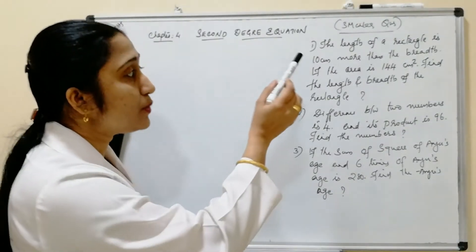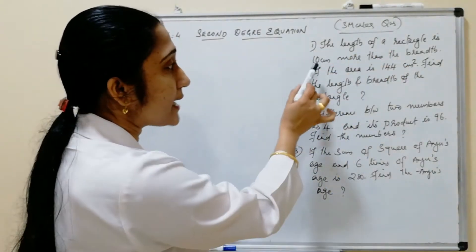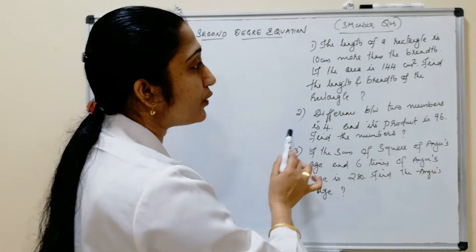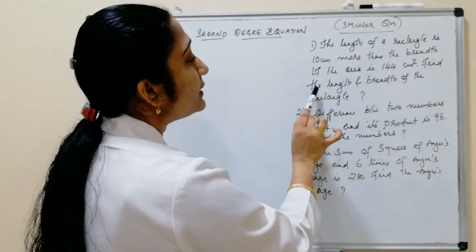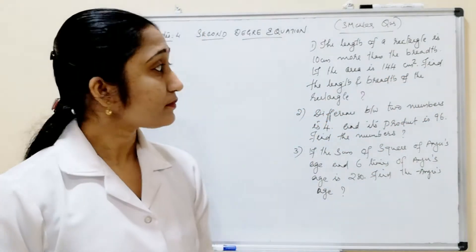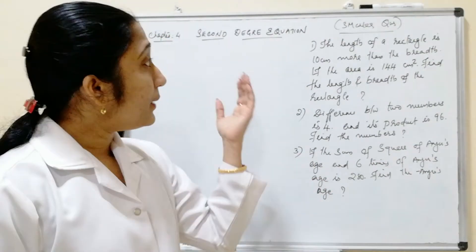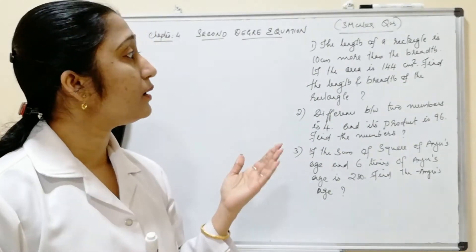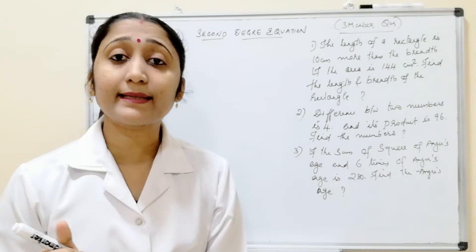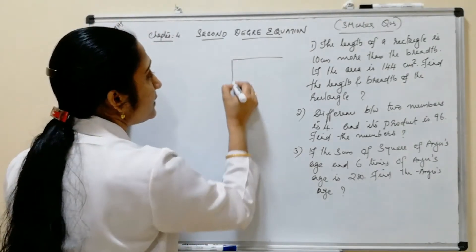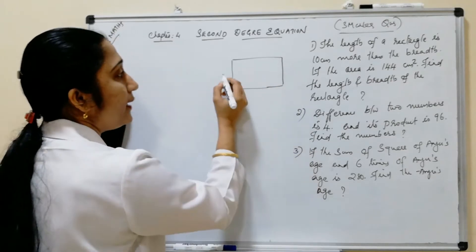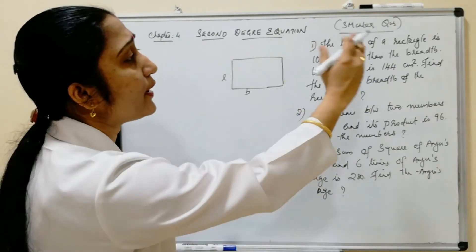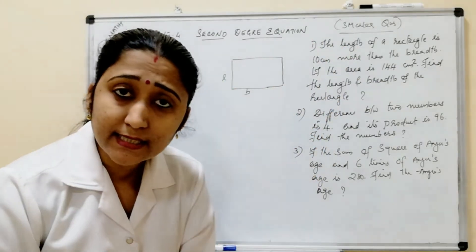The first problem: the length of a rectangle is 10 cm more than the breadth. If the area is 144 cm², find the length and breadth of the rectangle. This is a word problem, and we have to solve it based on the second degree equation. Here we want the length and breadth of the rectangle — length and breadth. The length of a rectangle is 10 cm more than its breadth.